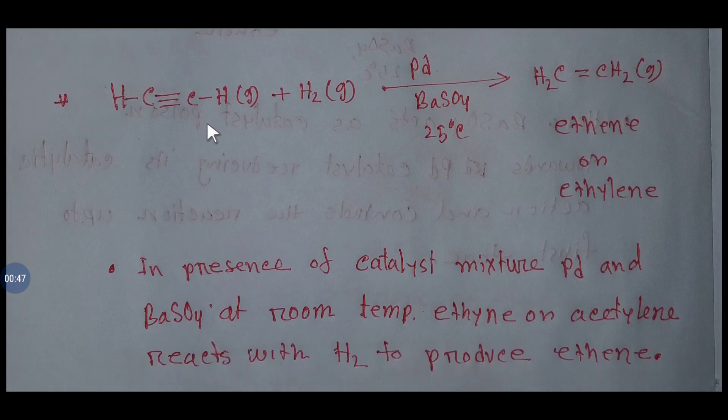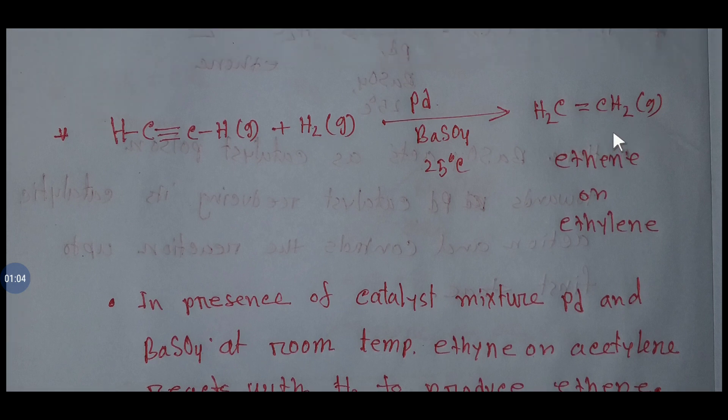In presence of catalyst palladium and barium sulfate at room temperature, it reacts with hydrogen and produces ethene or ethylene.